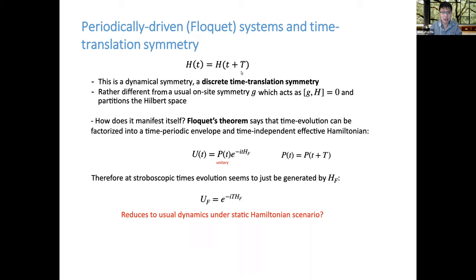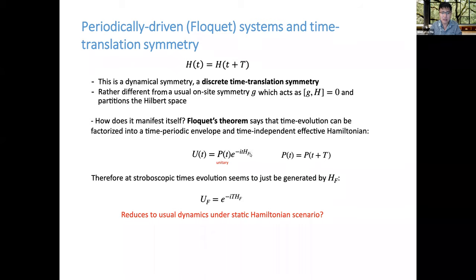I will also generalize this to quasi-periodic systems. There's a theorem called Floquet's theorem: if you have periodicity in time, the unitary time evolution operator can be decomposed into two parts — one part is a unitary which is time-periodic with the same periodicity as the Hamiltonian, and one part H_F, the Floquet Hamiltonian, which is time-independent. You obtain it by evolving over one period and taking a logarithm of the unitary. Naively, this is the time version of Bloch's theorem — at stroboscopic times, dynamics are simply generated by H_F, suggesting it reduces to the static Hamiltonian scenario.